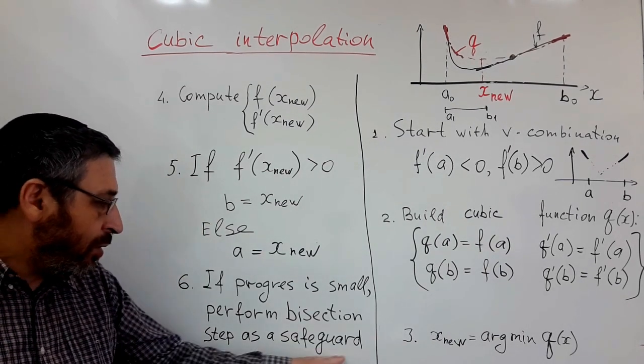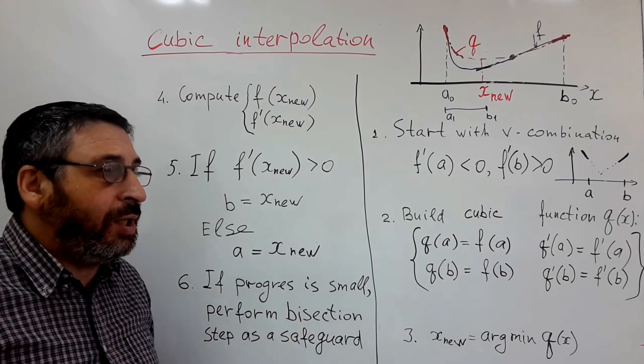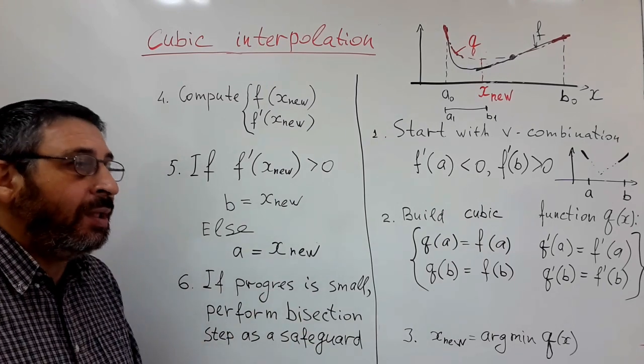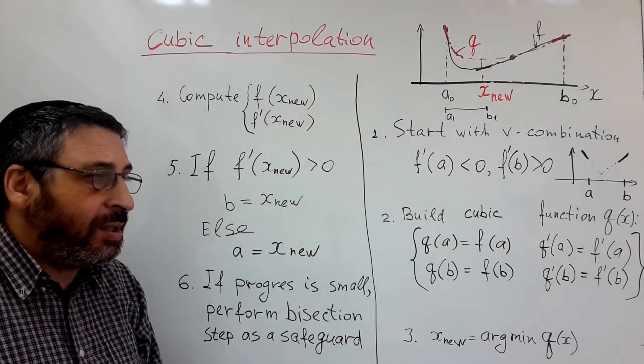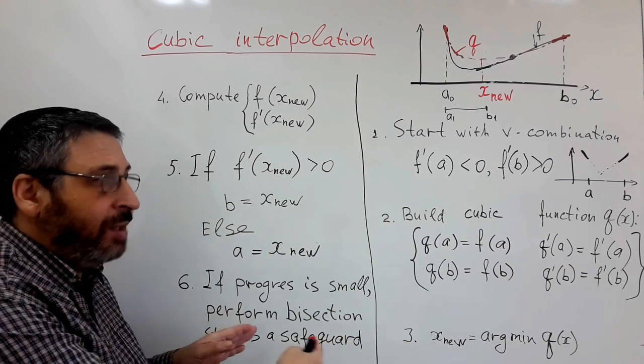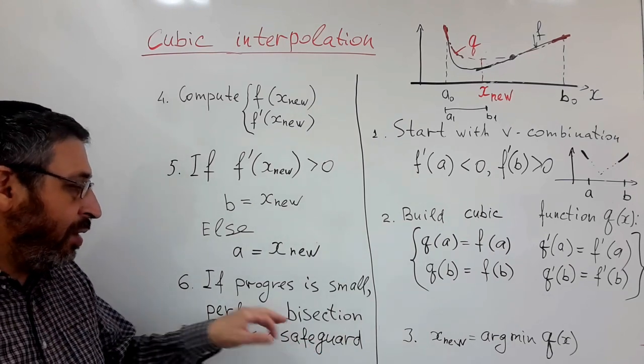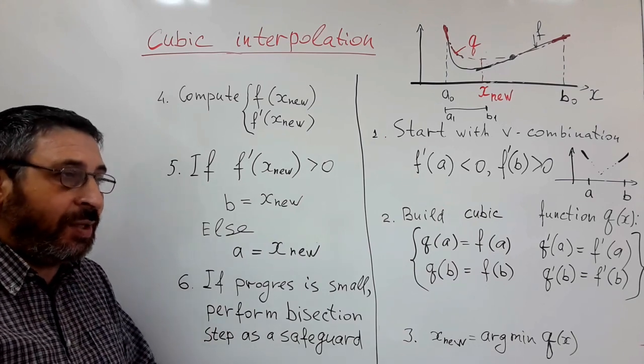And also we use so-called safeguard. Sometimes cubic interpolation may be not very good, especially in initial steps. So the progress, the reduction of uncertainty interval may be slow. And in this case we can perform bisection step as safeguard.